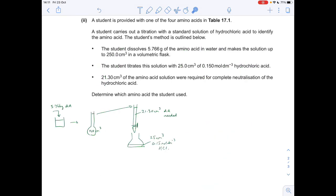Okay, so for the final part of the question, we've got to work out which of the four amino acids that was in the original table 17.1 was used in the titration. I always draw, and I always encourage my students to draw, a little diagram of the process. It makes it much easier to see what's happened. So they've taken 5.766 grams of the amino acid, dissolved it in some distilled water, put it into a volumetric flask, 250 cm cubed, and made it up to the mark.